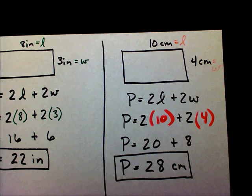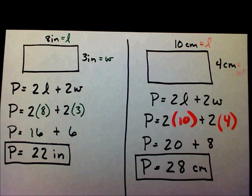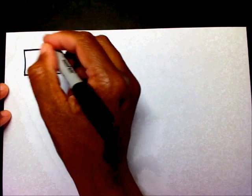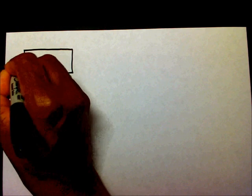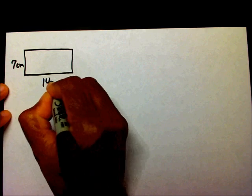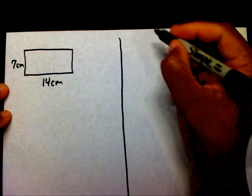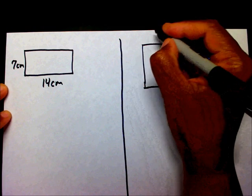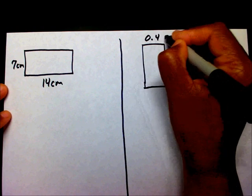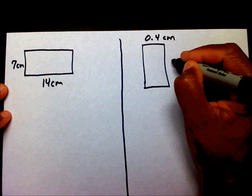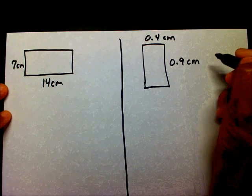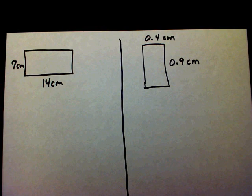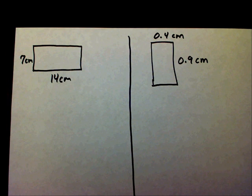I'm going to let you work two problems right now, because I think this is pretty straightforward. Let's see how you'll do. I'll give you two problems. This is 7 centimeters and this is 14 centimeters. Over here, this is 0.4 centimeters and this is 0.9 centimeters. Please find the perimeter of these two rectangles, and place the video on pause. Thank you.